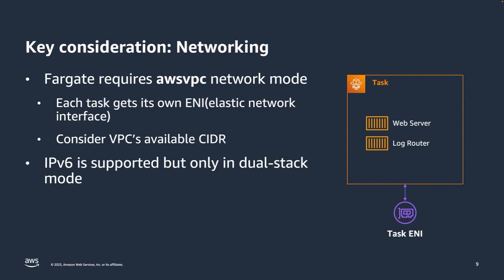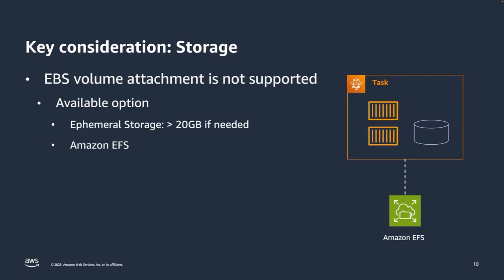For larger IP address space, IPv6 is supported but only in dual-stack mode, meaning each task gets both an IPv4 and an IPv6 address. From a storage perspective, Fargate supports Amazon EFS (a managed file system service) and ephemeral storage, but external storage like EBS volumes is not supported. Therefore, if you are currently binding EBS volumes to ECS workloads, you must seek alternative substitutes.